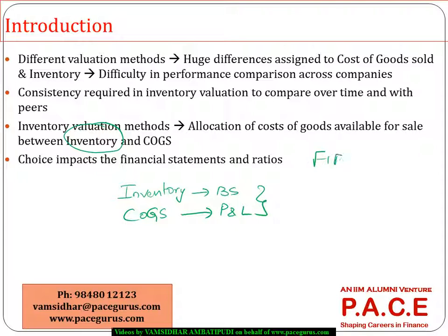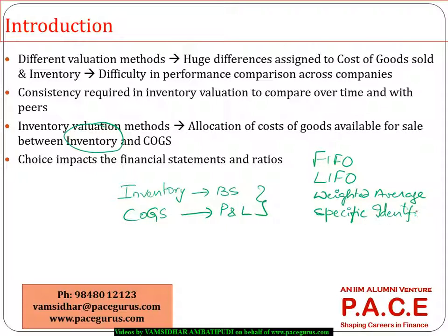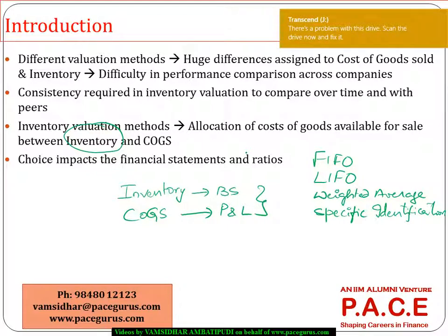We have a first-in, first-out method (FIFO), a last-in, first-out method (LIFO), a weighted average method, and also a specific identification method. With each of these inventory valuation methods, we look at how the financial statements really get impacted, how to build that, and how to convert one financial model from the other — all those things we would typically look at.